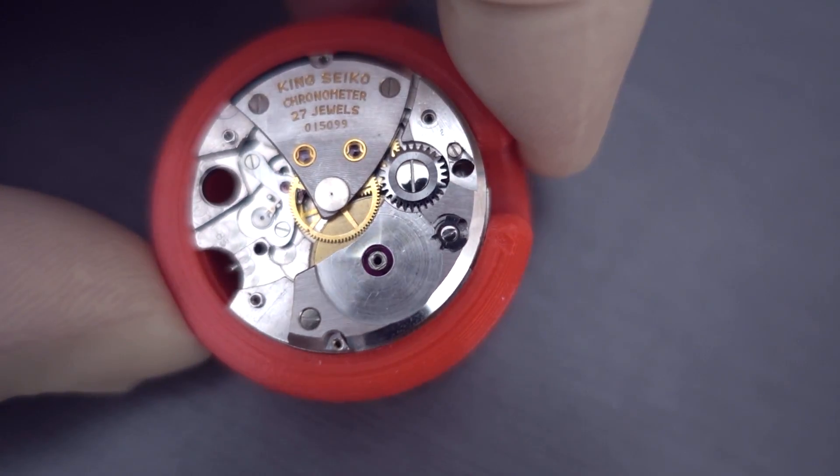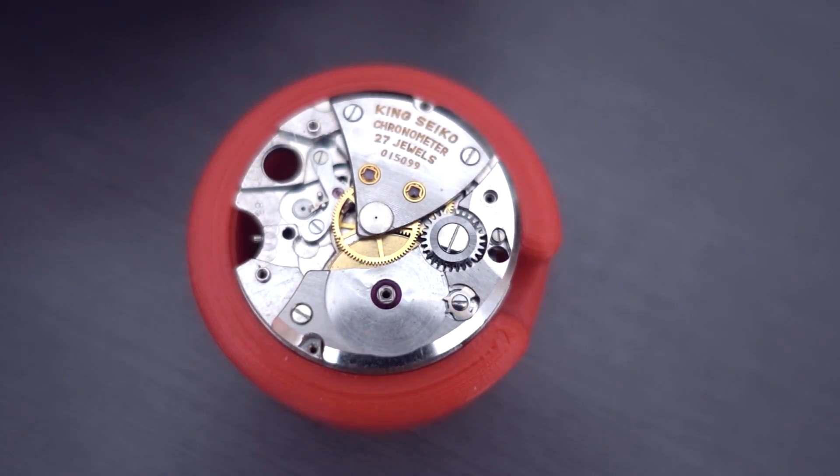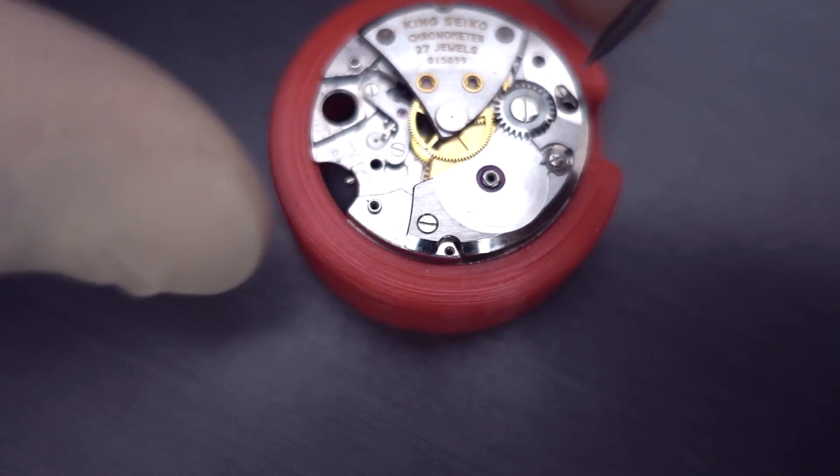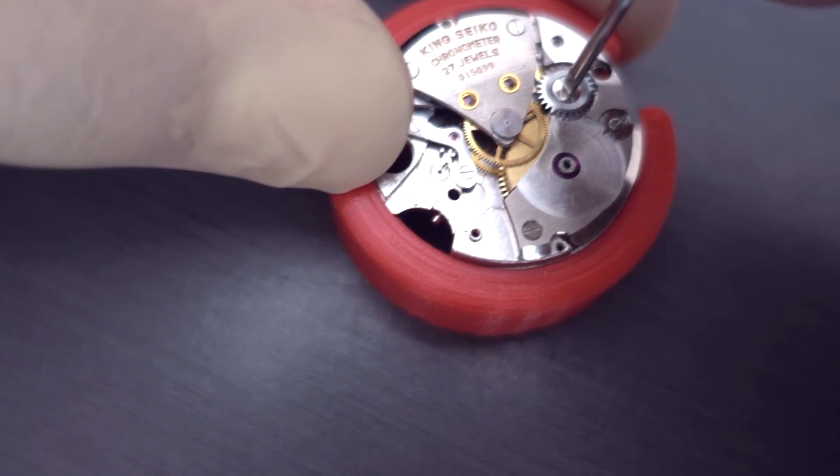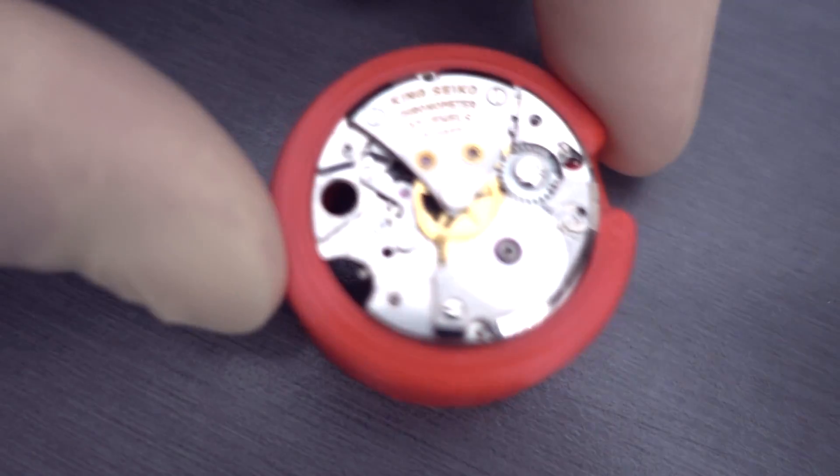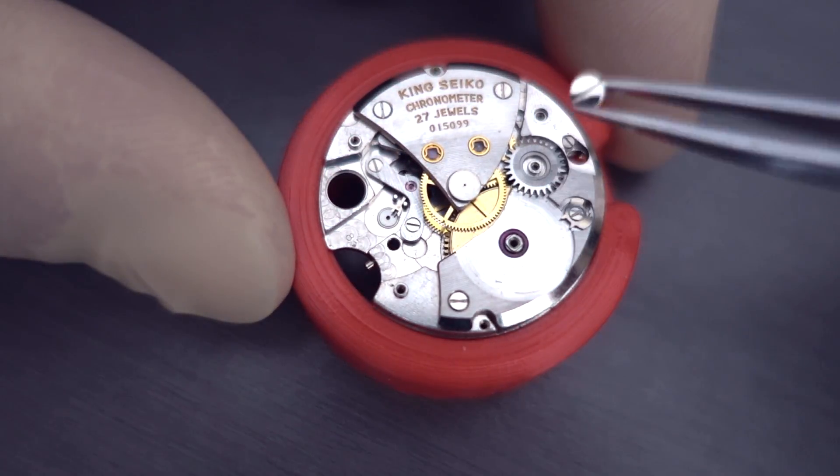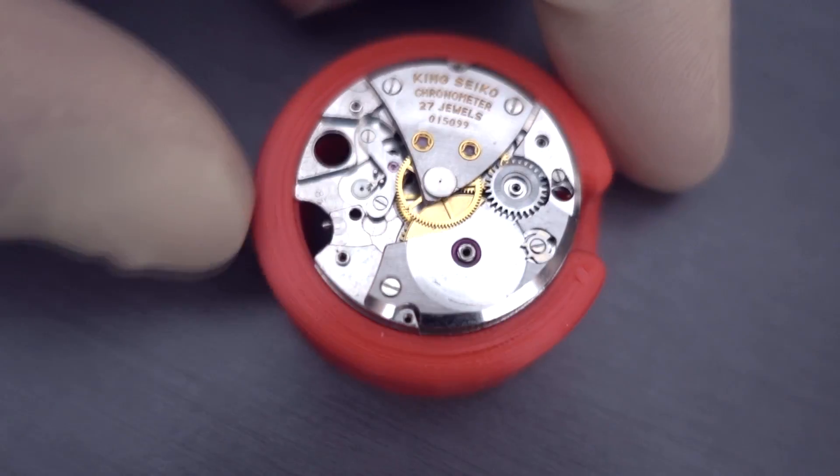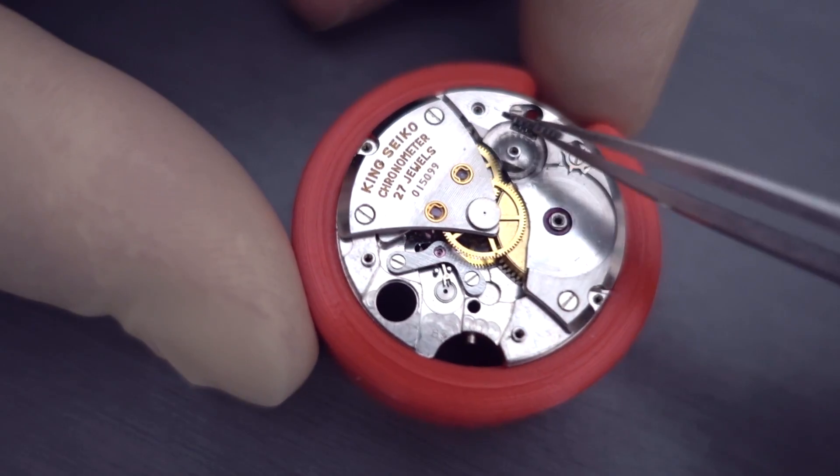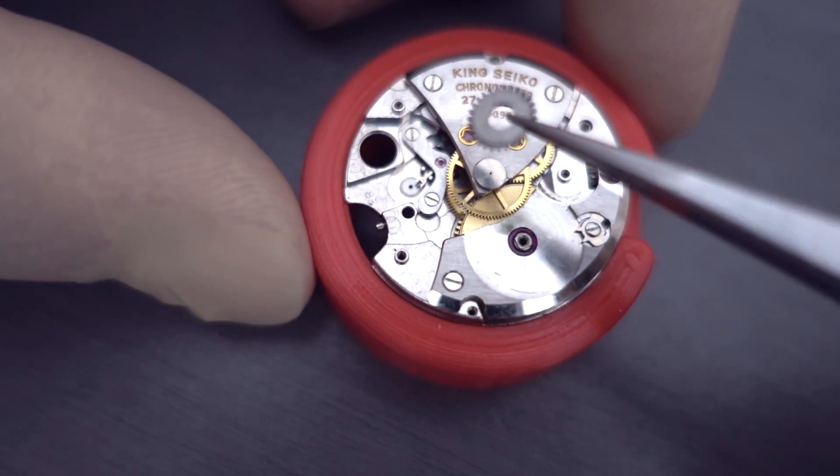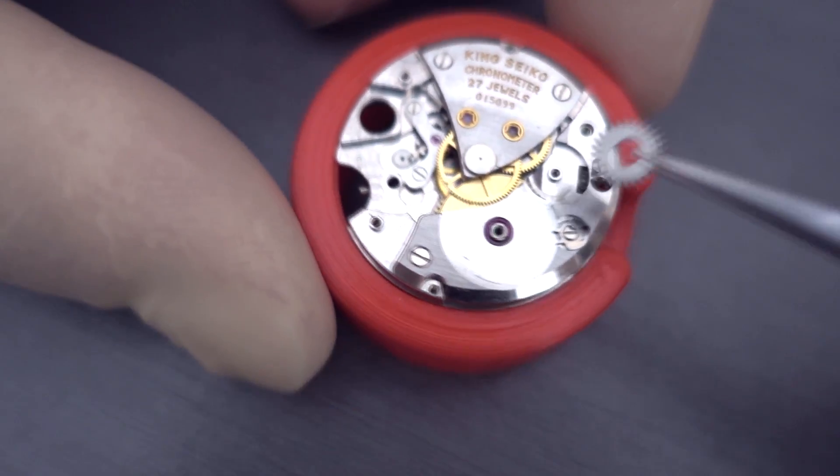Either someone used a very thin oil inside the barrel. Or they might have done the old trick with squirting some oil down the crown tube to try and get it running again. Which I've seen dozens of times. I hope that wasn't the case and it was just a thin oil used in the barrel. The problem with using a thin oil in the barrel is it tends to migrate outside of the barrel quite easily. And just ends up everywhere.